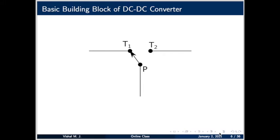Now let us discuss the basic building block of a DC-DC converter. What is being shown is an SPDT switch — a Single Pole Double Throw switch. We have only one pole, and we have two throws, T1 and T2. The pole can be connected to either T1 or T2.